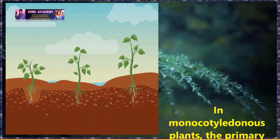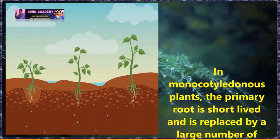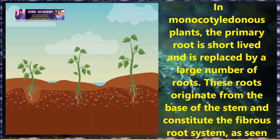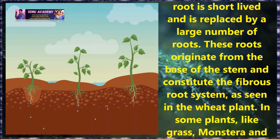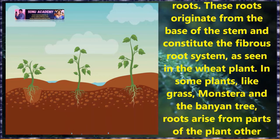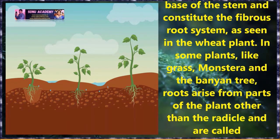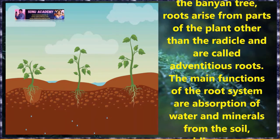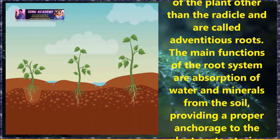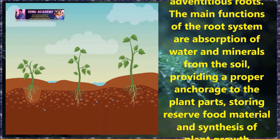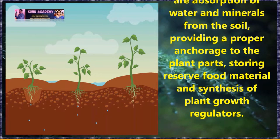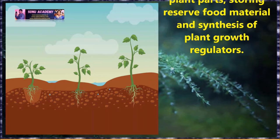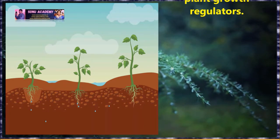In monocotyledonous plants, the primary root is short-lived and is replaced by a large number of roots. These roots originate from the base of the stem and constitute the fibrous root system, as seen in the wheat plant. In some plants like grass, Monstera and the banyan tree, roots arise from parts of the plant other than the radical and are called adventitious roots. The main functions of the root system are absorption of water and minerals from the soil, providing proper anchorage to the plant parts, storing reserve food material, and synthesis of plant growth regulators.